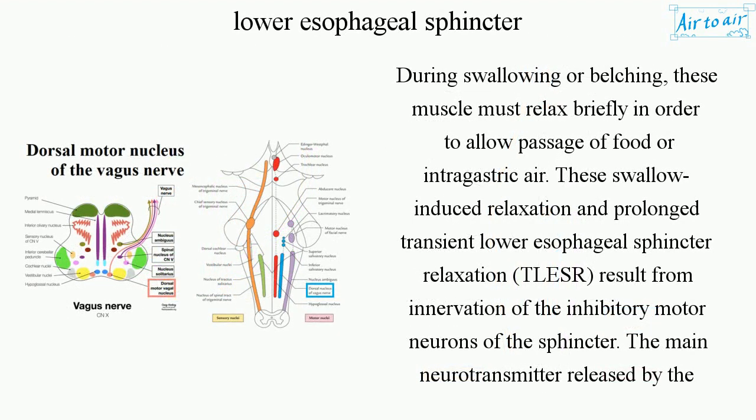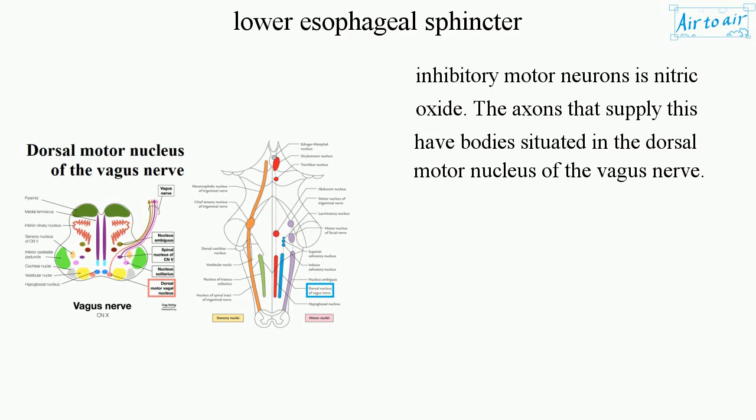During swallowing or belching, these muscles must relax briefly to allow passage of food or intragastric air. Swallow-induced relaxation and prolonged transient lower esophageal sphincter relaxation (TLESR) result from innervation of the inhibitory motor neurons of the sphincter. The main neurotransmitter released by the inhibitory motor neurons is nitric oxide. The axons that supply this have cell bodies situated in the dorsal motor nucleus of the vagus nerve.